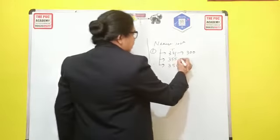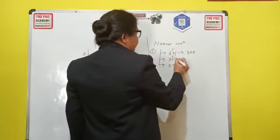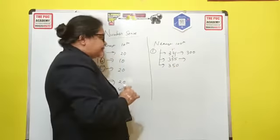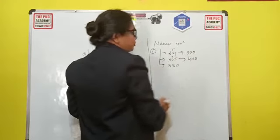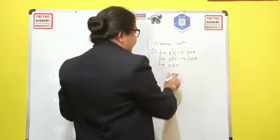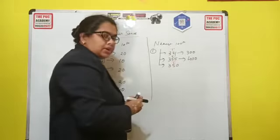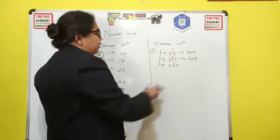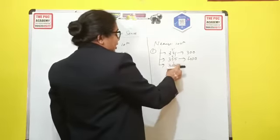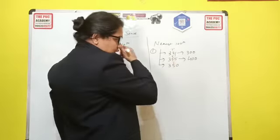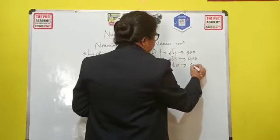For 355, on the tens position, the number is 5 — so the answer will be the next hundred, that is 400. For 350, it may seem complicated but it's easy to understand. The number 350 is in the middle, but since the tens position digit is 5, which is 5 or bigger than 5, the answer will be the next hundred, that is 400.